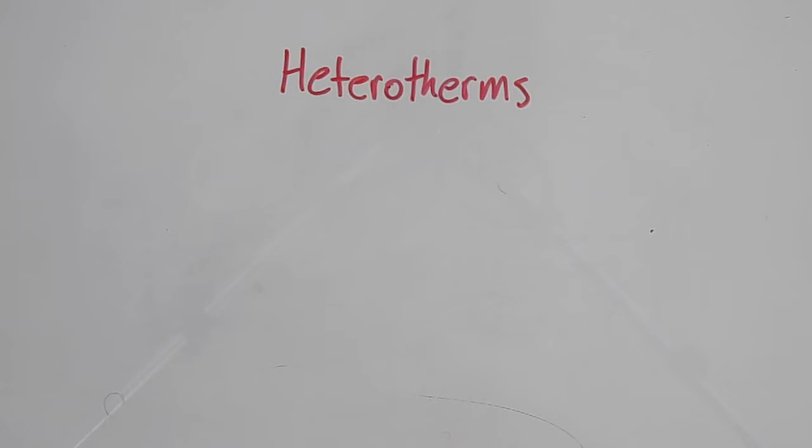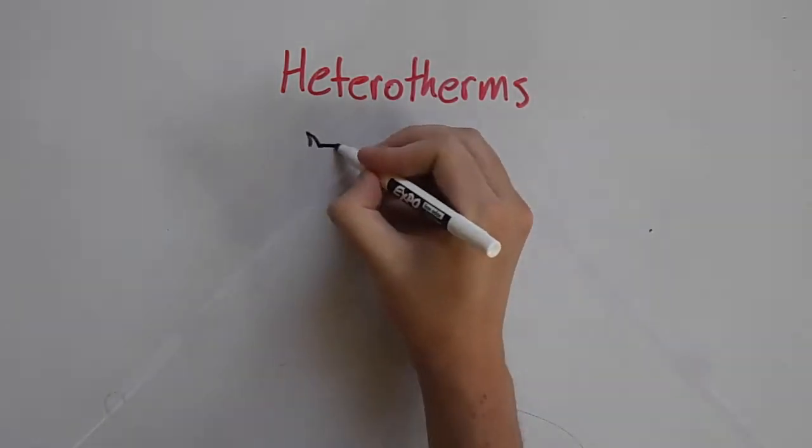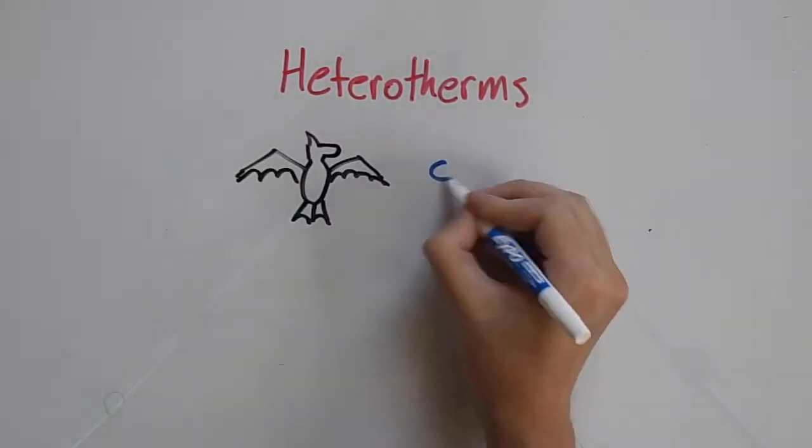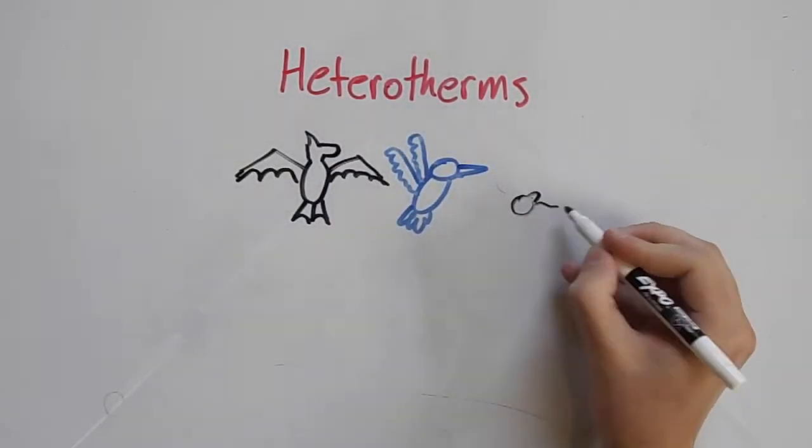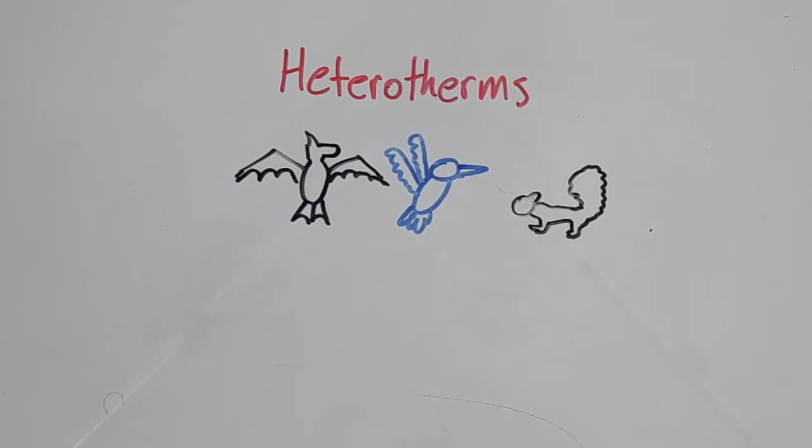Heterotherms are usually small birds or mammals, capable of internal metabolism. They include bats, hummingbirds, chickadees, squirrels, mice, raccoons, and some small marsupials.